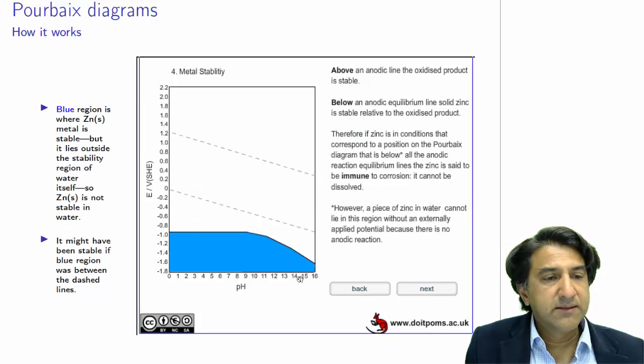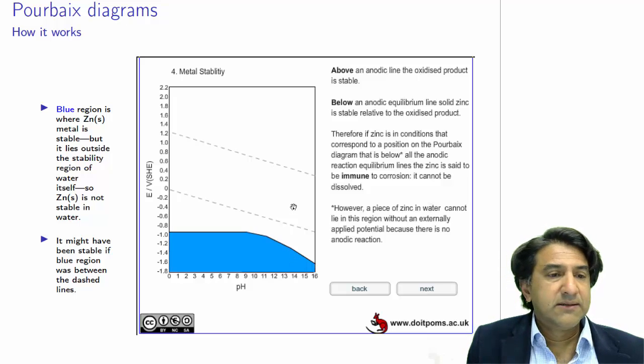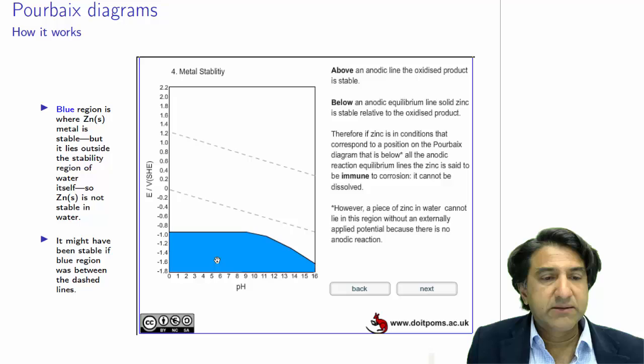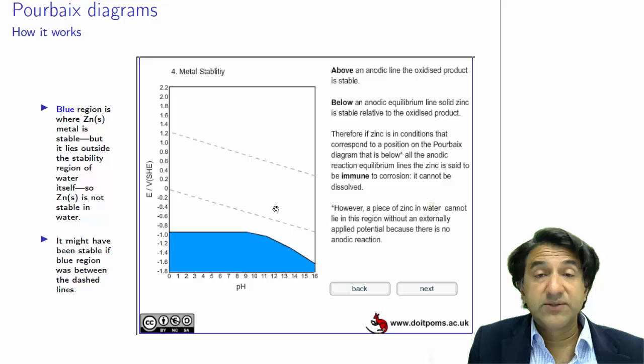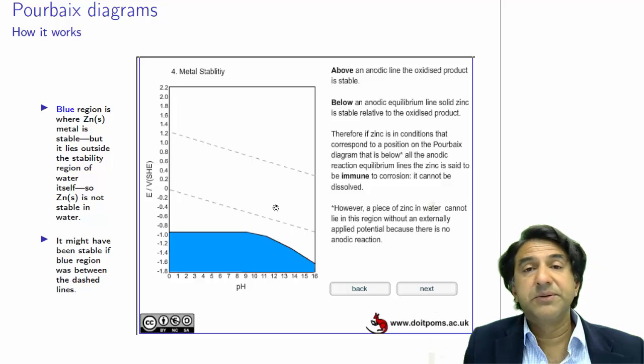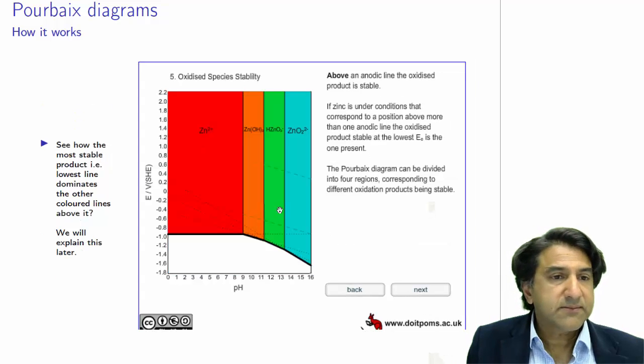OK, so zinc is stable down here. Unfortunately, it's stable under conditions where water itself is not stable. So yes, it's stable, but actually zinc metal can never occur in water in its metallic form. That's what you get from this diagram, a very powerful way to see that in a very simple way, and you get that all for free from the E0 tables.